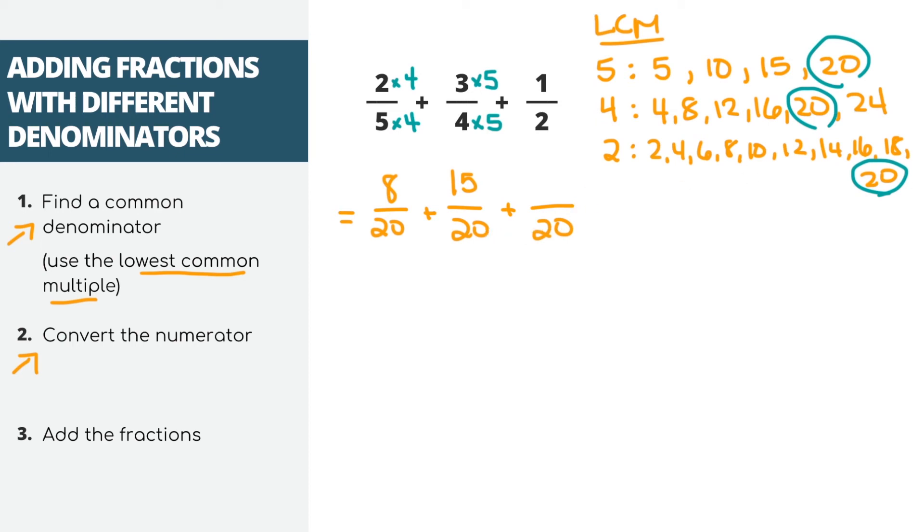Finally, let's do it for our last fraction. We converted the denominator to 20 by multiplying 2 times 10, which is 20. So let's also multiply the top by 10. And our new fraction is 10 over 20. Again, note that we haven't changed the problem at all, we just rewrote the fractions so they have the same denominator.